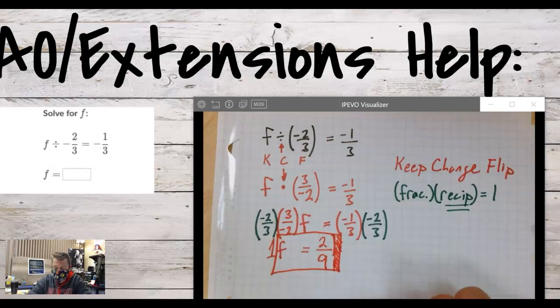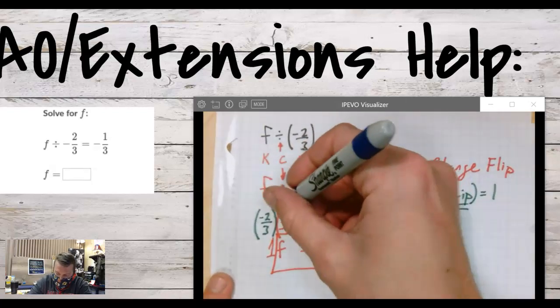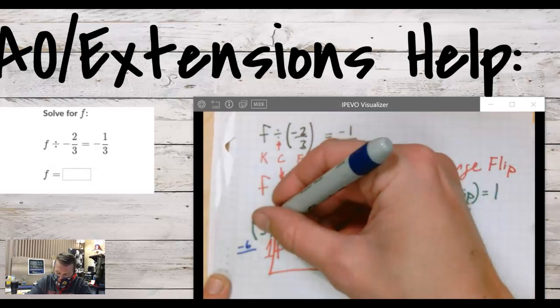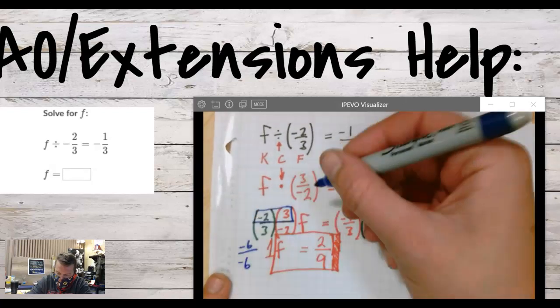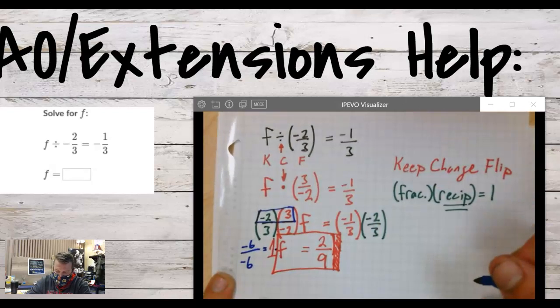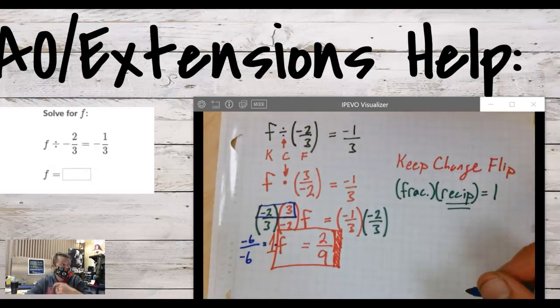The reason that we get one f, just to review that, is the multiplication over here - the numerator would become negative six, the denominator would be negative six. Negative six over negative six is one. And that's how we get the one times f. But we don't need to write one f. We can just write f.